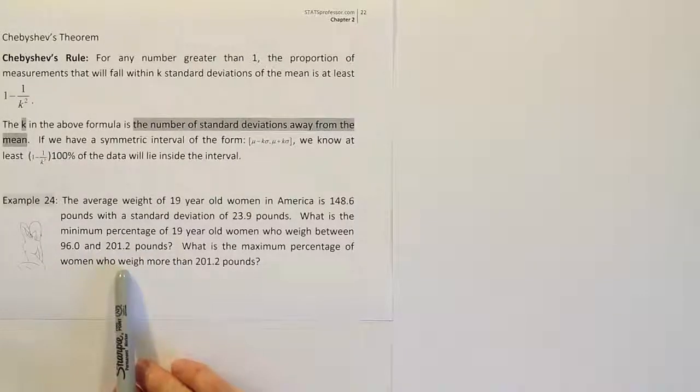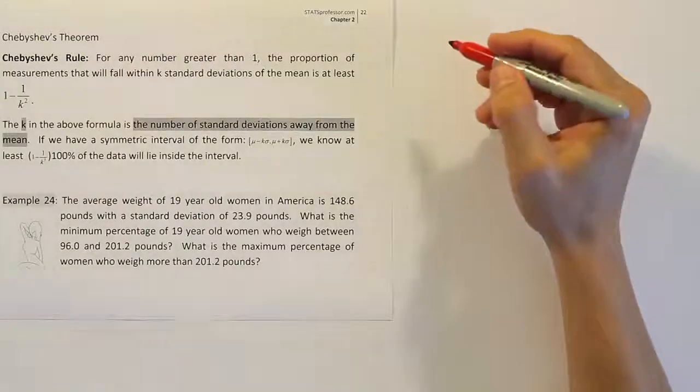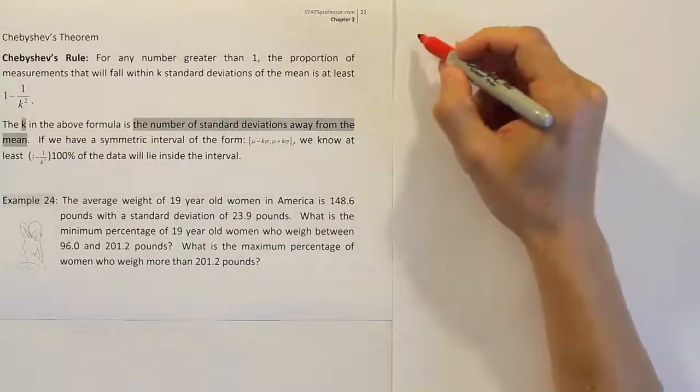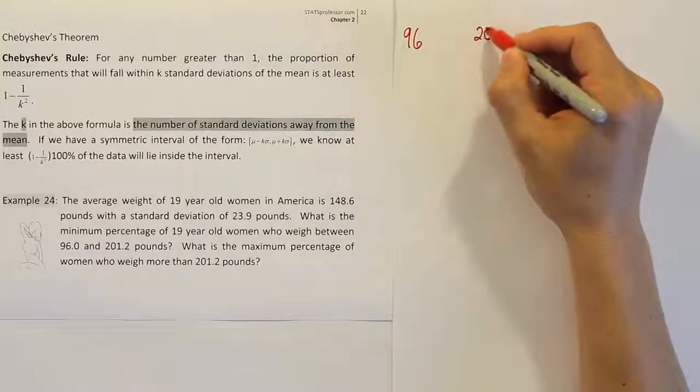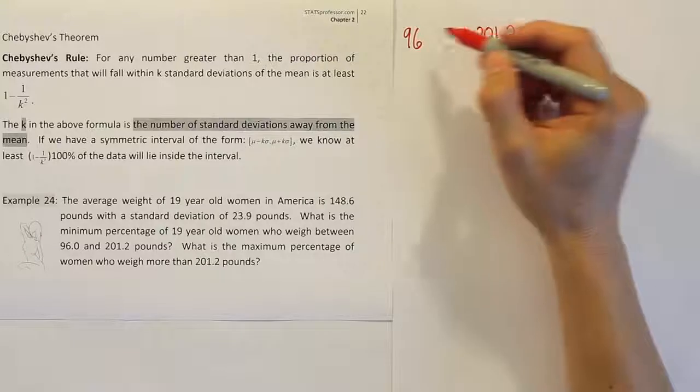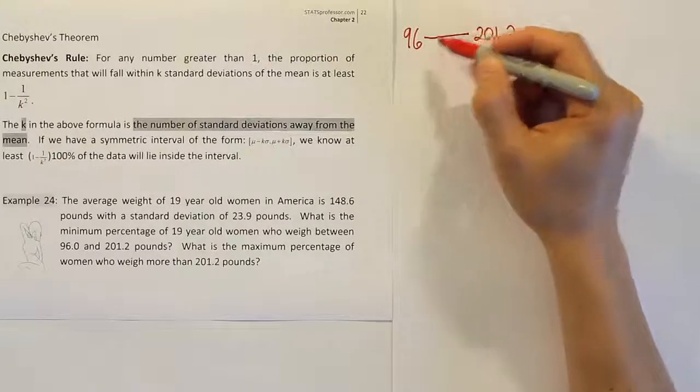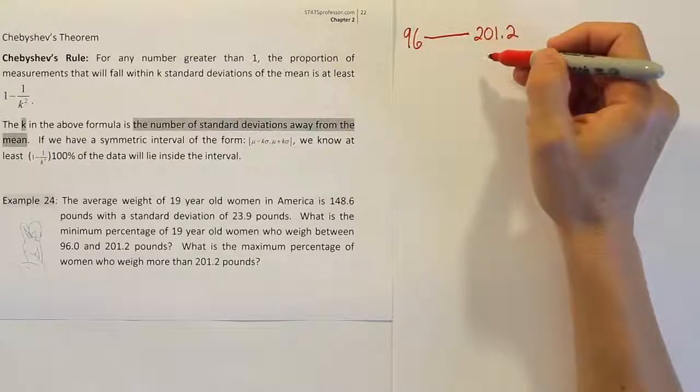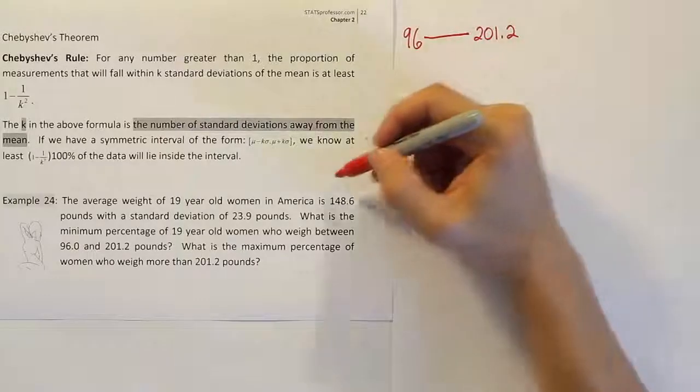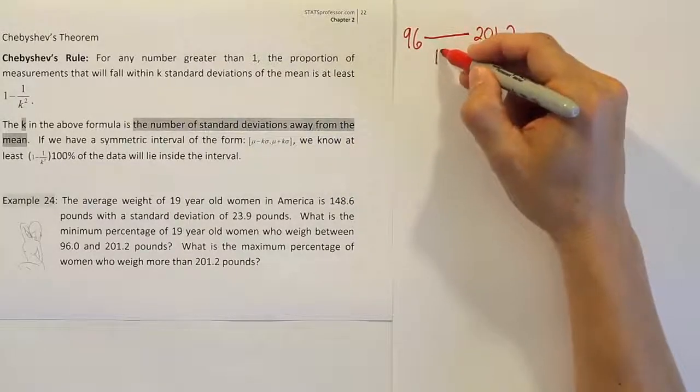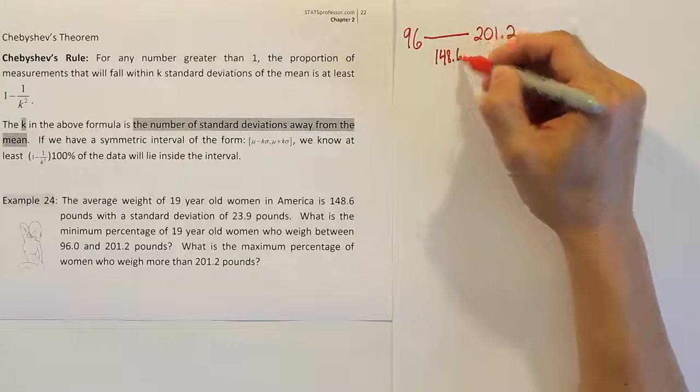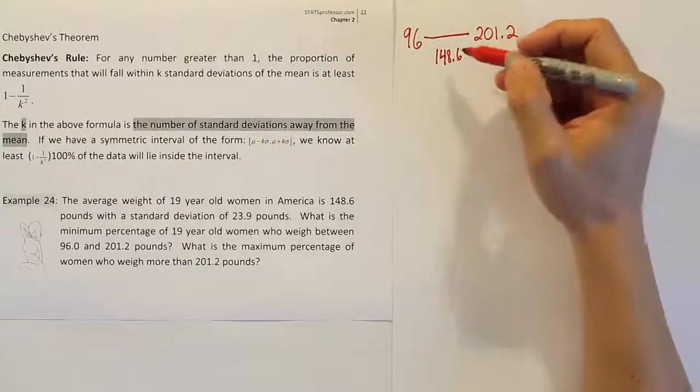So what do I mean when I say symmetric about the mean? Well, let's put those two numbers on a number line, 96 and 201.2. So if I put 96 here and 201.2 here, imagine this is on a number line. 96 would be on the left because it's smaller. Where's the mean that they gave us? They told us the mean was 148.6. So that would be like in the middle somewhere. The question is, is it exactly in the middle?